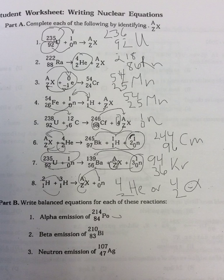The alpha is 4 over 2 He, and it's just a simple math problem. Plus you're going to have another product. We subtract 4 from that, so we're going to be left with 210, and we subtract 2 from this and we're left with 82. Our product is good old lead, Pb.